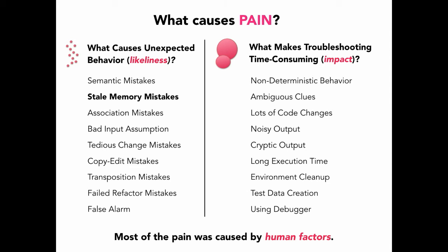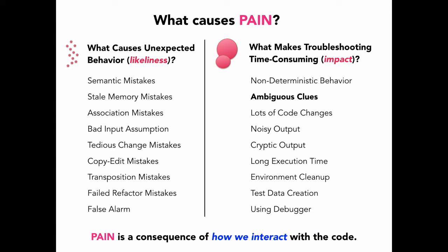For example, stale memory mistakes — this is when I have an idea in my head about how the code should work, but it doesn't work that way anymore because somebody changed it. Or ambiguous clues — this is when you're running an experiment and there are multiple possibilities for how behavior can occur, and you make a bad assumption and down the rabbit hole you go, troubleshooting for hours. These aren't really problems with the code itself.